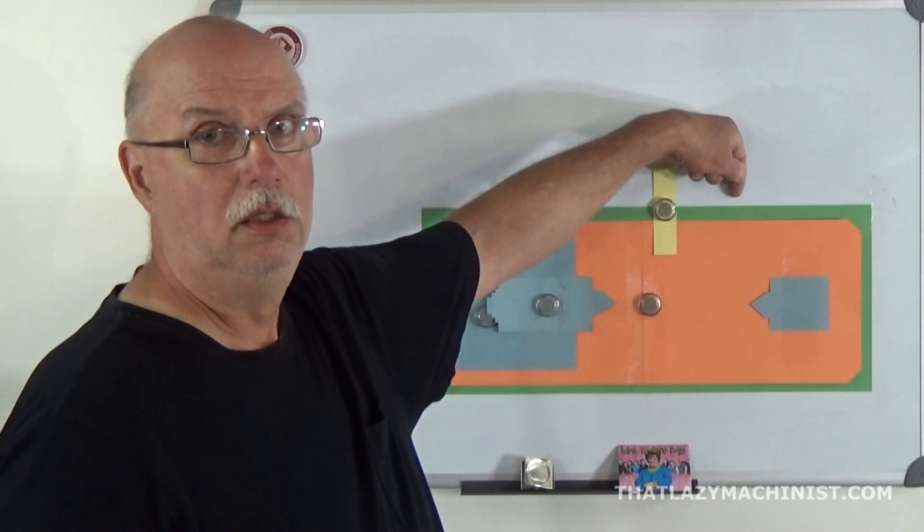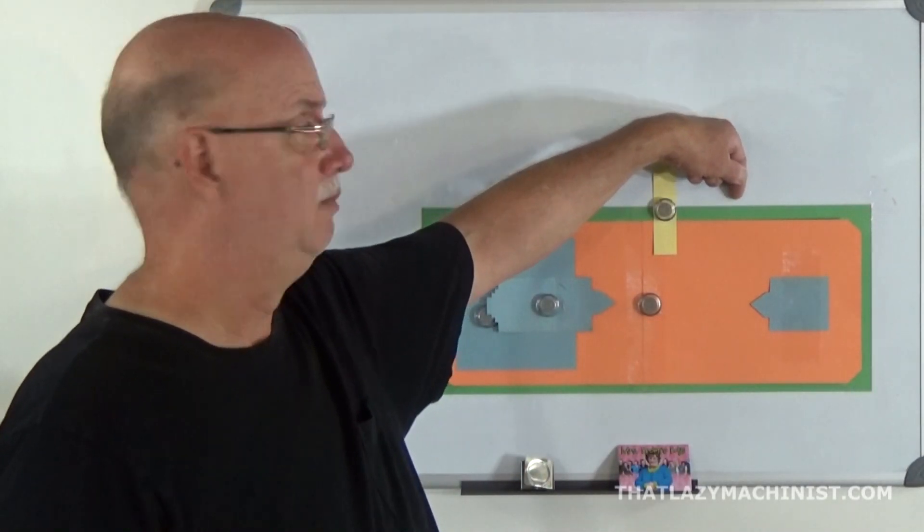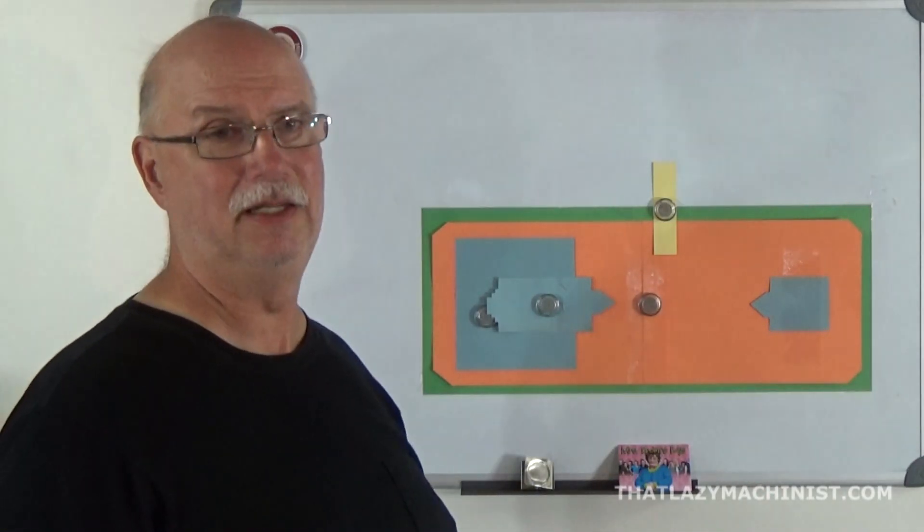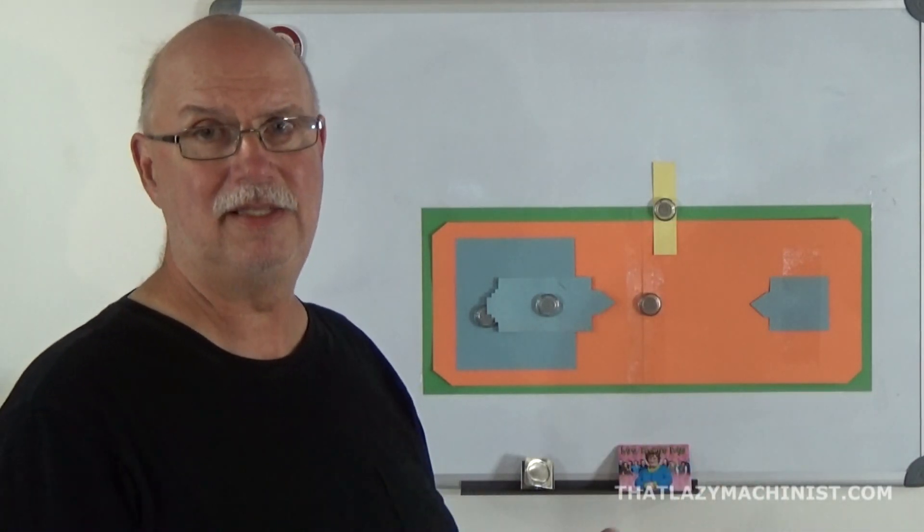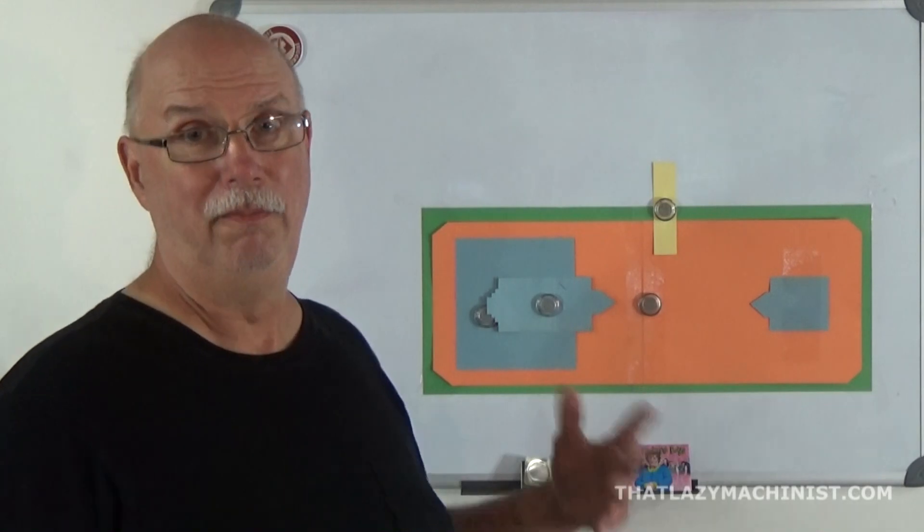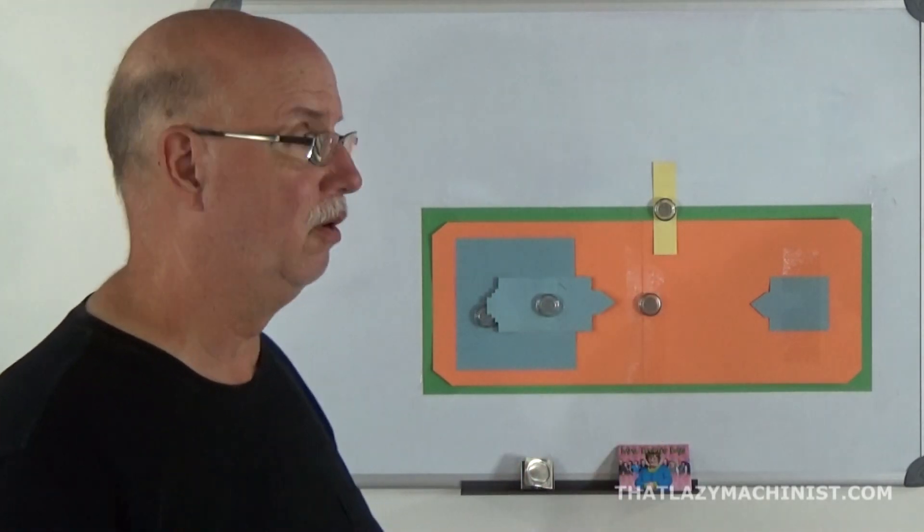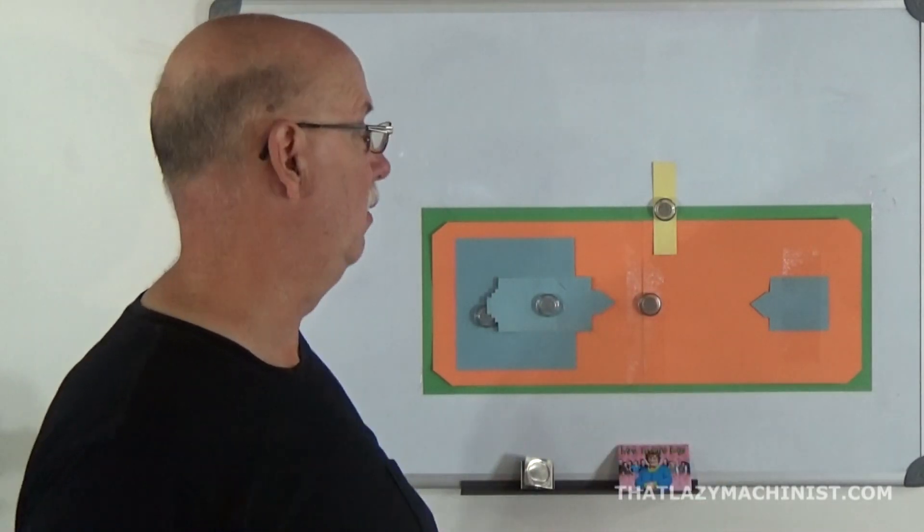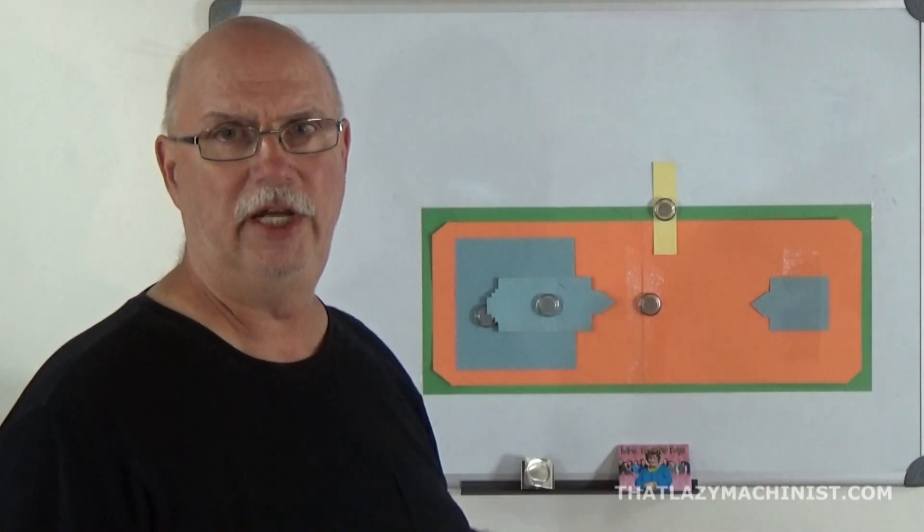The lower table isn't adjustable. It rides on the casting and it depends on the casting and its ways to make it run true or straight or whatever you want to call it.